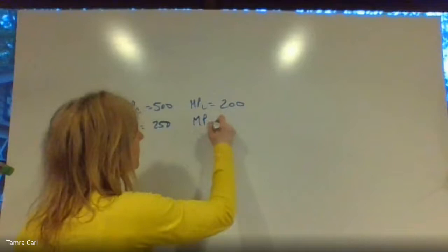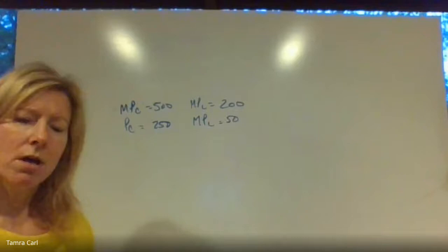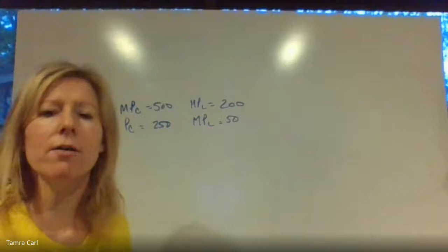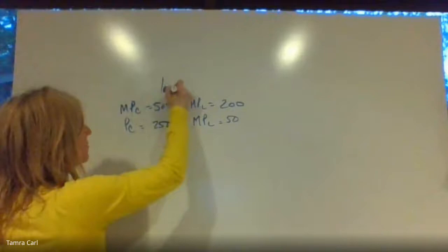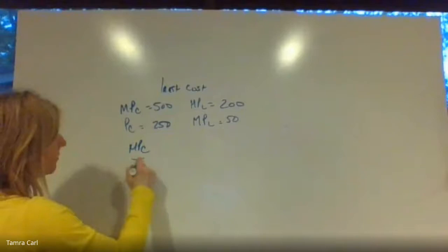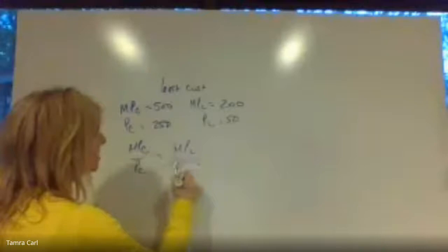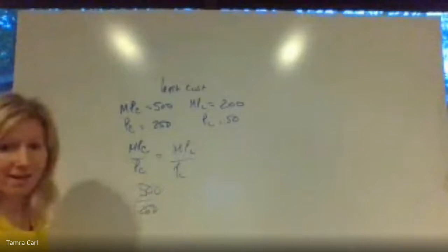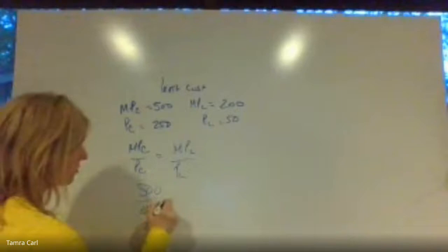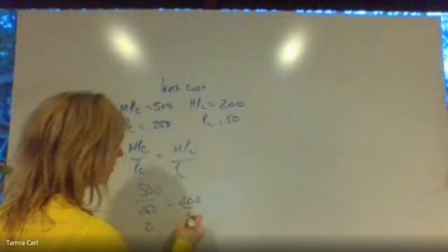For the least-cost rule: marginal product of capital over price of capital has to equal marginal product of labor over price of labor. Show your work on the AP exam. So 500 over 250 equals 2. Does that equal 200 over 50? No — that's 4. So now the question is: do you employ more or less? I need to get that ratio of 2 closer to 4.